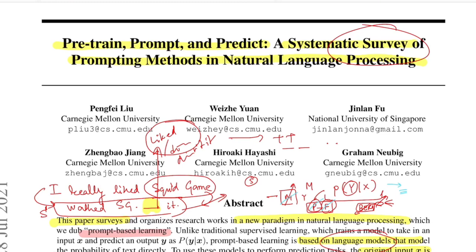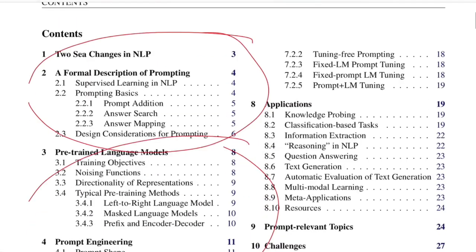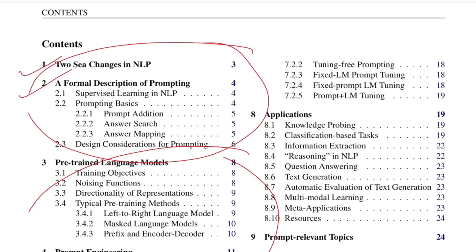Hello there and welcome back to the channel. This is the second part of the survey paper titled 'Pre-train, Prompt and Predict: A Systematic Survey of Prompting Methods in Natural Language Processing' from researchers at Carnegie Mellon University. In the previous video we discussed the paradigm shifts in the NLP learning space, the basic notion of prompting, and some design considerations.